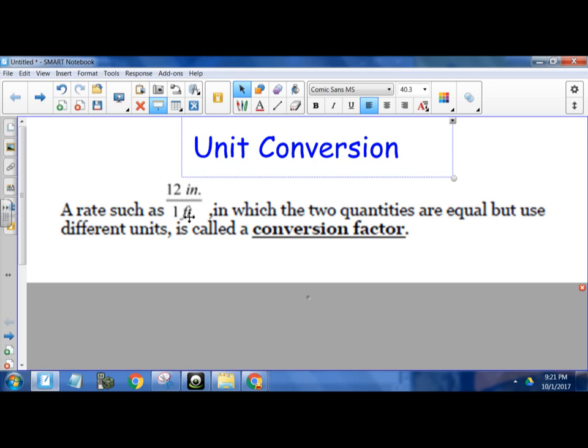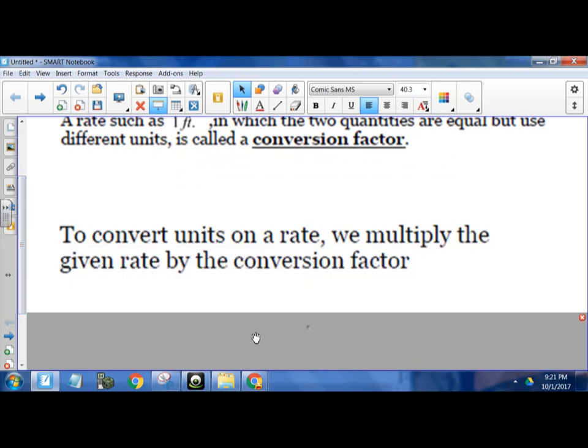So we can all agree that 12 inches is equal to 1 foot. So this is actually just 1. 12 inches and 1 foot are the same thing. So that's just a fancy form of 1. So what we're going to do is multiply by these conversion factors and really not change the number because we're going to keep multiplying over and over by 1.